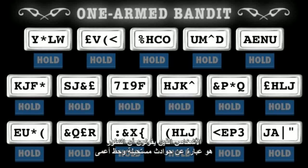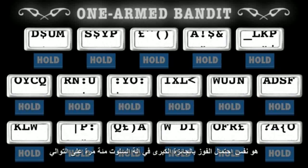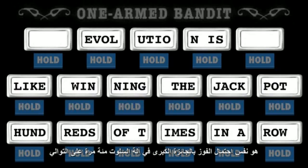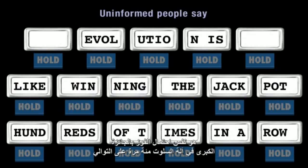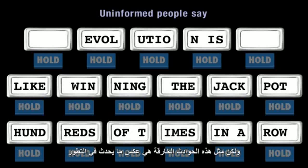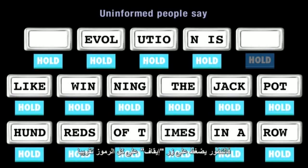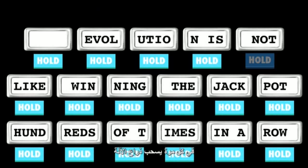People who say that evolution is all about impossibly unlikely accidents and blind luck often like to claim that the probability of lifeforms evolving is the same as the probability of winning the jackpot on a one-armed bandit hundreds of times in a row. But miraculous accidents are the opposite of what evolution is about. If we're going to use the one-armed bandit analogy, then evolution presses the hold button on almost all symbols on every pull of the lever.